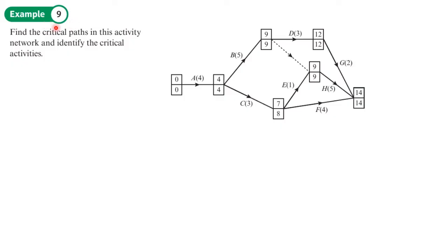Example nine: find the critical paths in this activity network and identify the critical activities. So the first thing that we need to do is to highlight where we see the same numbers for the early event time and the late event time. Then we want to see where the differences between those values is the same.